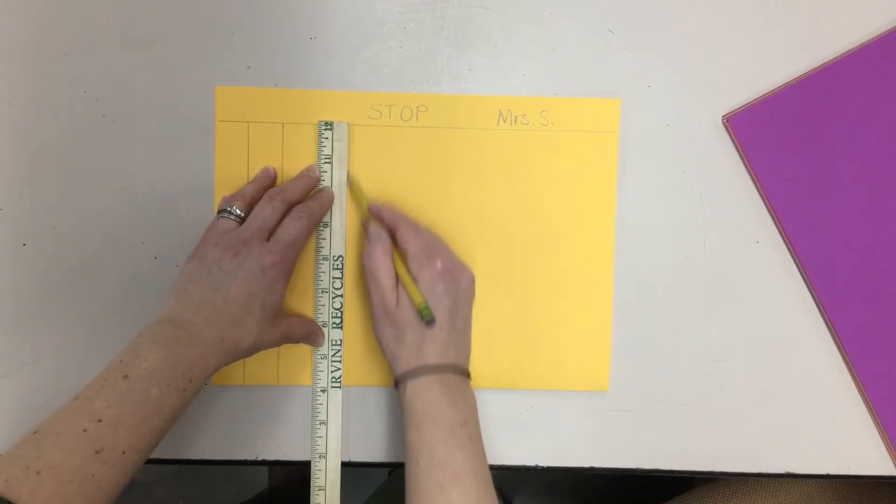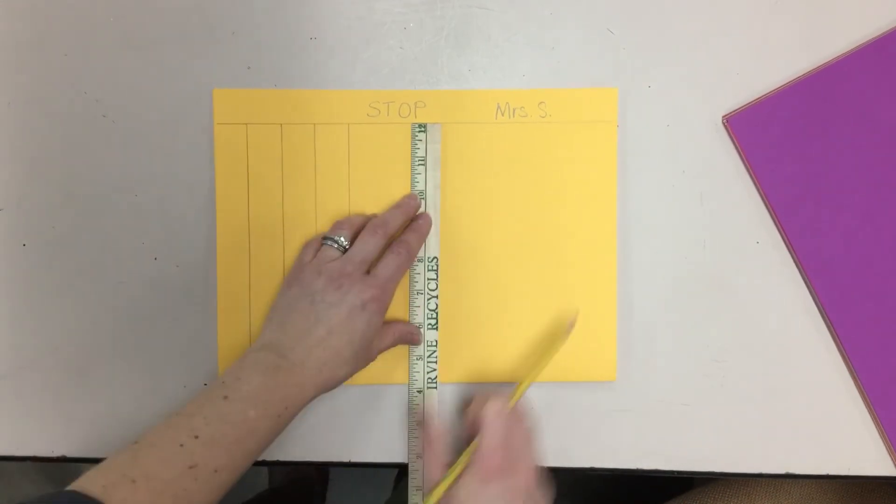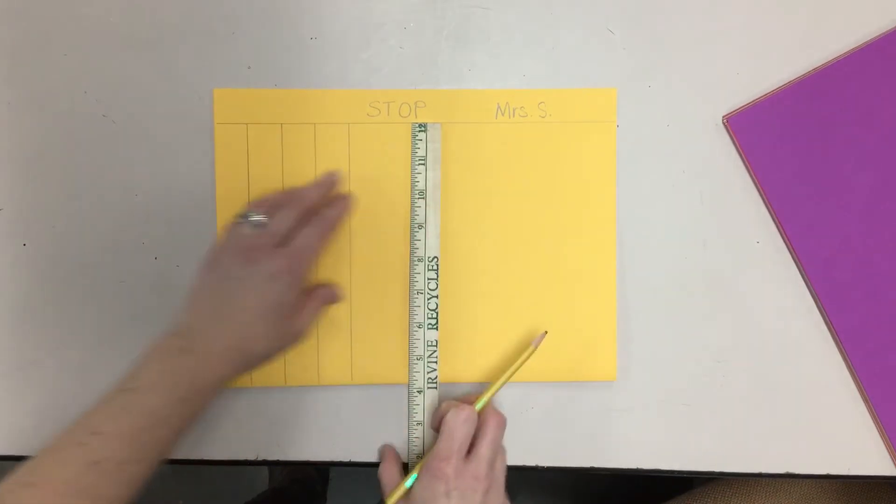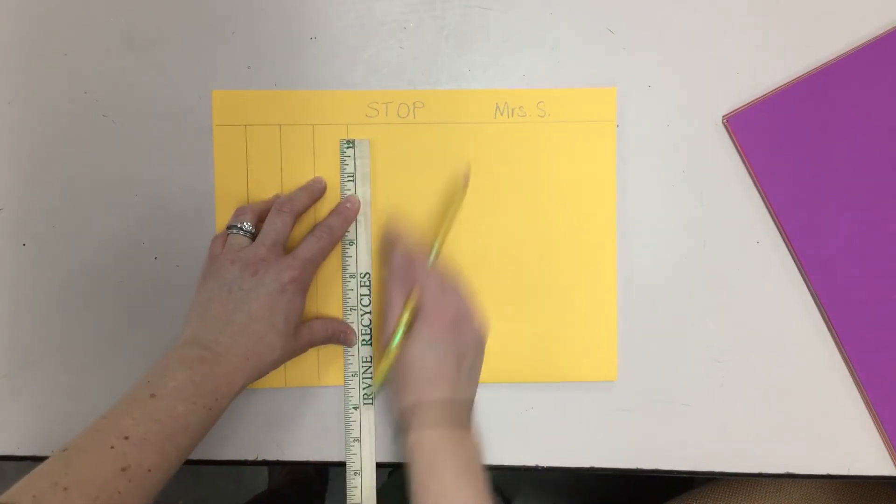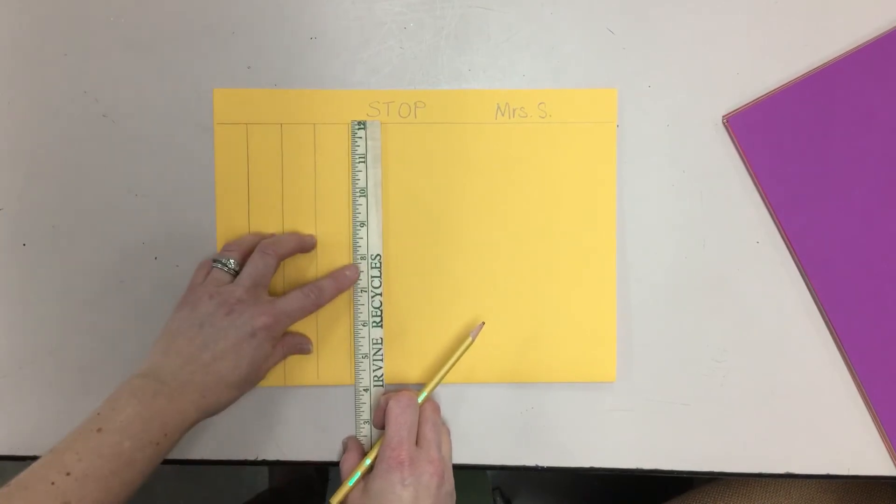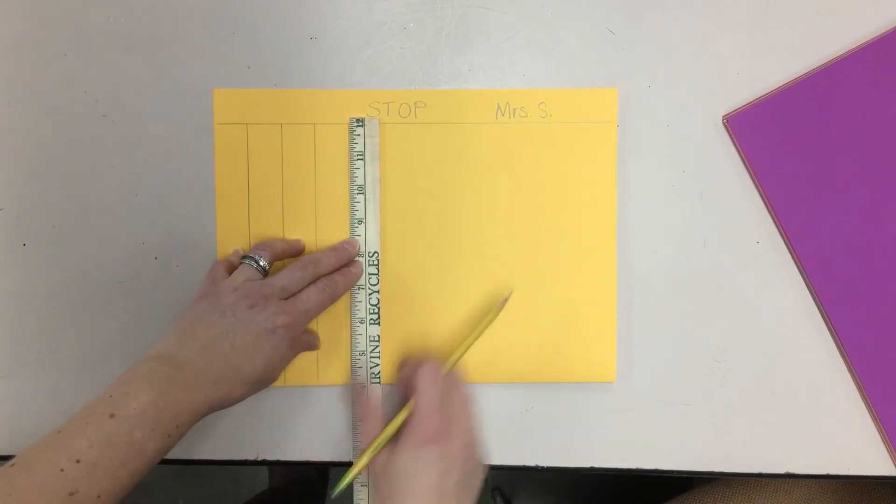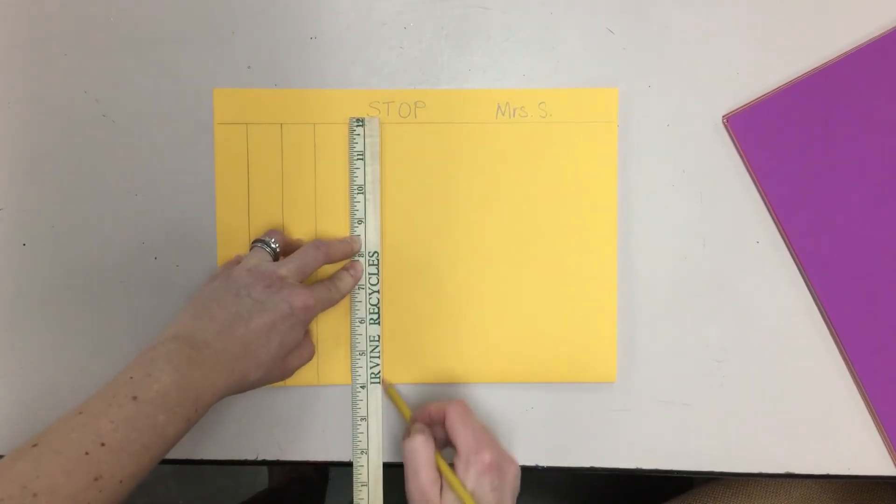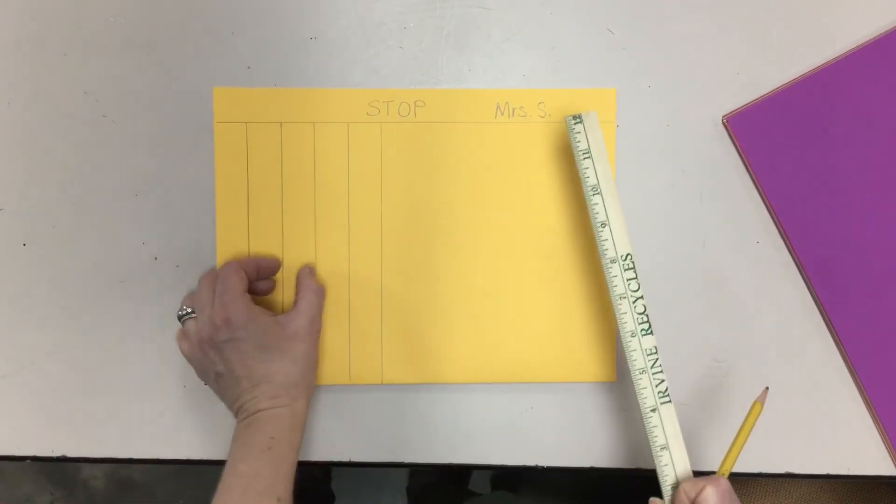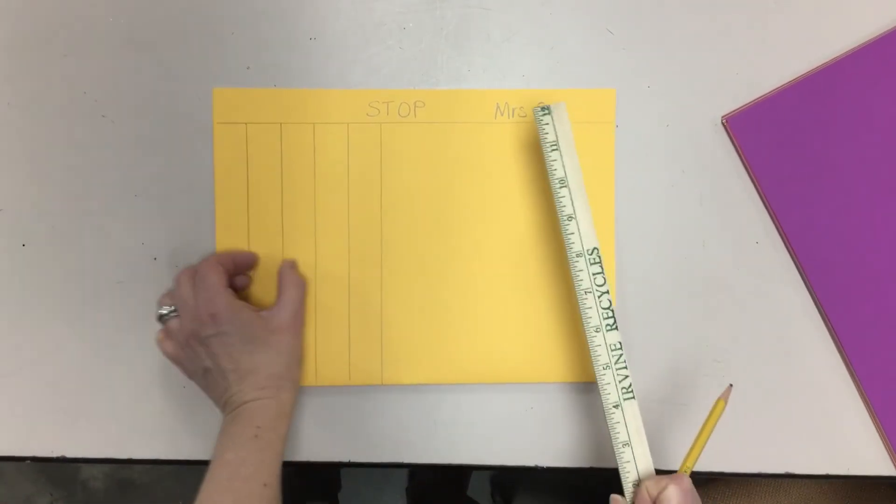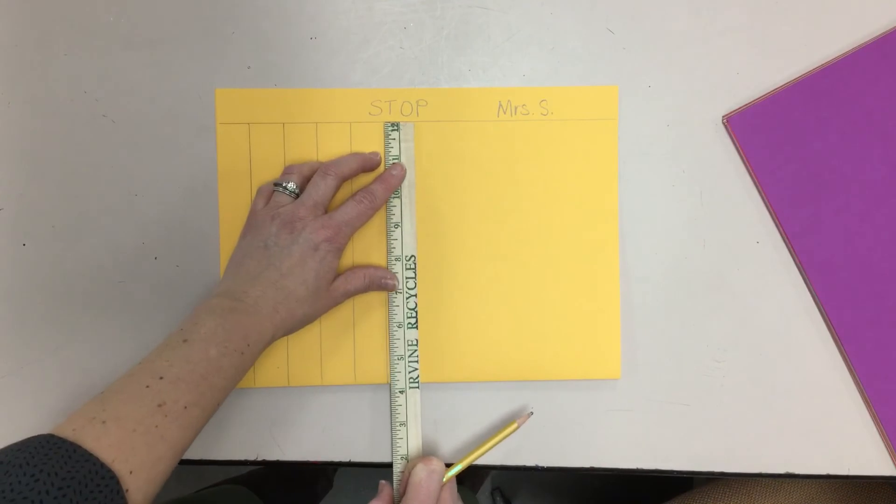I'm not just randomly putting my pencil lines. I'm not going to make a pencil line here. I'm not going to make a pencil line here. I have to use this line on the one side of my ruler to make a line on the other side of my ruler so that each line is a ruler's width apart.